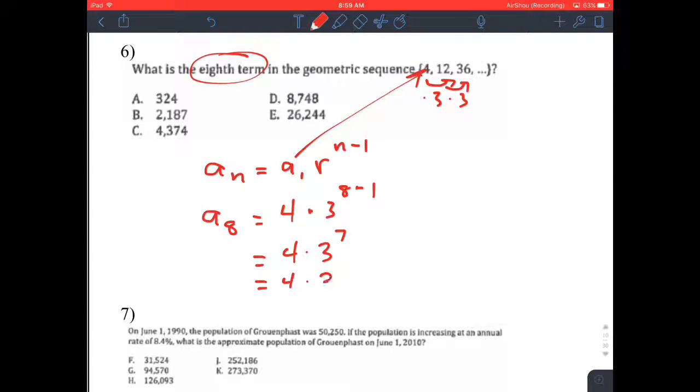3 to the 7th is 2187. Multiply that by 4, you get 8748, which is answer D.